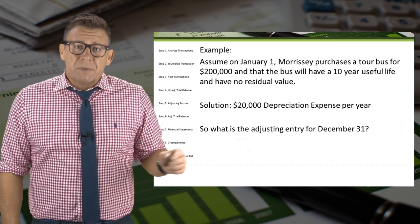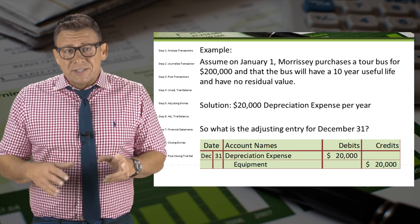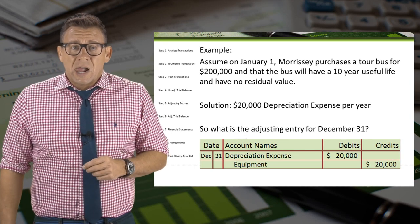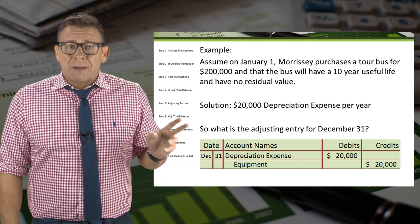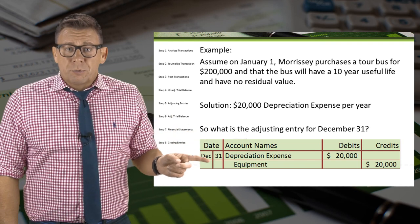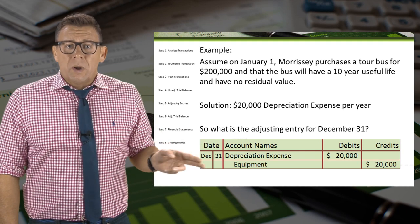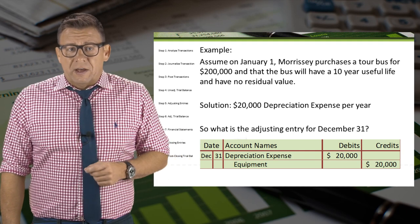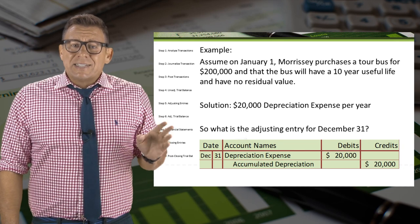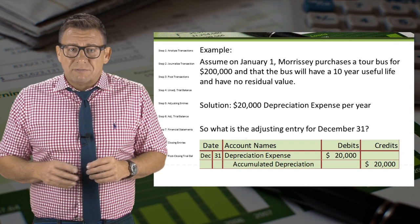So let's make the adjusting entry. Following the same pattern as our other deferral adjusting journal entries, we might assume it is something like what I've shown here: a debit to depreciation expense and a credit to equipment for $20,000.